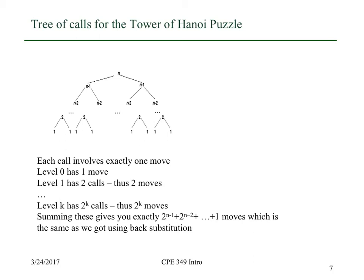A completely equivalent, somewhat more informative way to compute the closed form solution for the number of moves is to think about the call tree. So here's the call tree for Hanoi. There's the initial call with n as the first parameter. It makes two calls — on line three and line five — with the parameter being n minus one.